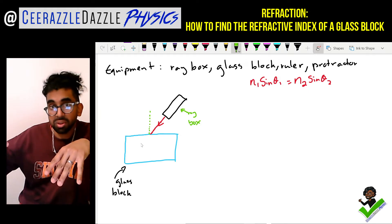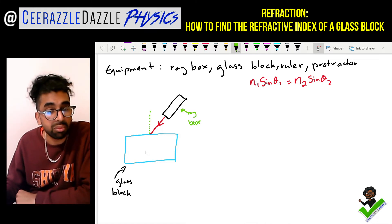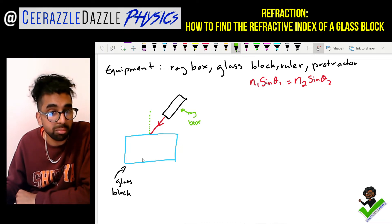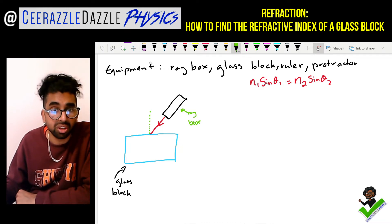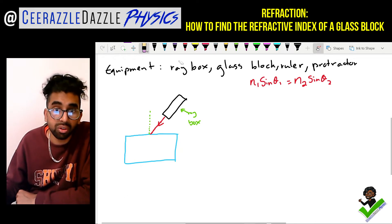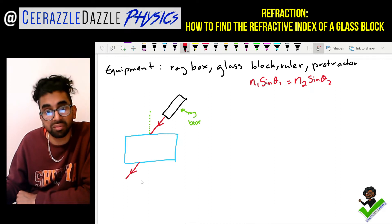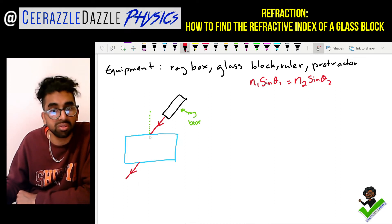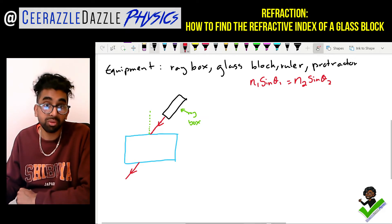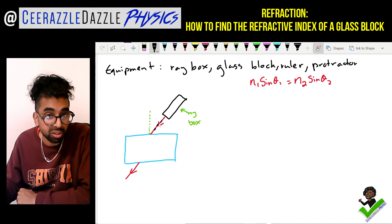In real life when you're doing this, you won't be able to see the ray of light within the glass block, but you'll be able to see it when it comes out on the opposite end. In the practical, you make marks along where the ray of light is going in, and you make marks where it's coming out.